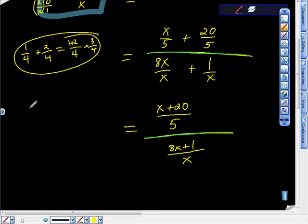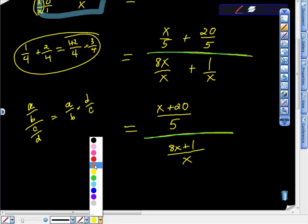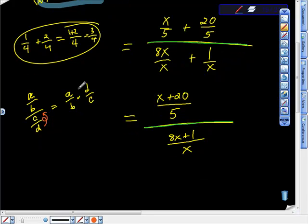Now, at the top of the video, I wrote this. This is the theorem of complex fractions, and it says that a over b over c over d is exactly the same as taking a over b and multiplying it by d over c. And what that is saying is that you just take the reciprocal of this bottom thing. So I'm going to do that. I'm going to apply this theorem right here to this problem.